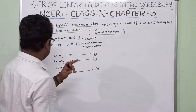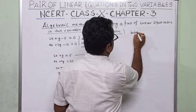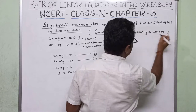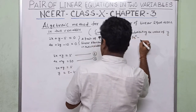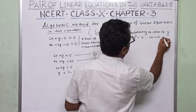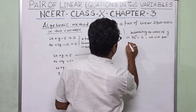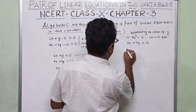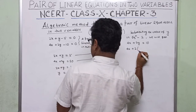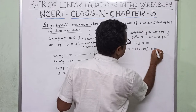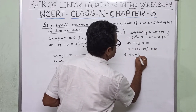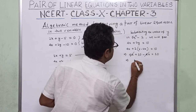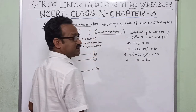Now substituting the value of y in equation 2: 4x plus 2y equals 10 becomes 4x plus 2 into (5 minus 2x) equals 10, that implies 4x plus 10 minus 4x equals 10. The 4x and minus 4x cancel, giving us 10 equals 10.